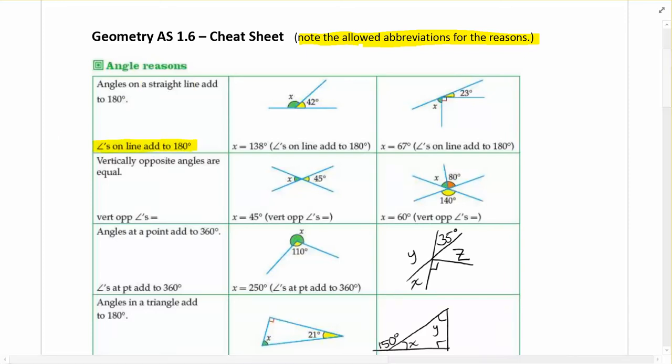So angle on a line add to 180 is an abbreviation of angles on a straight line add to 180, and it doesn't have to be exactly that abbreviation, but anything that if a marker was reading it they'd be able to understand exactly what you meant and what the specifics of the rule were. If you felt like writing out the entire rule, you can do that as well.